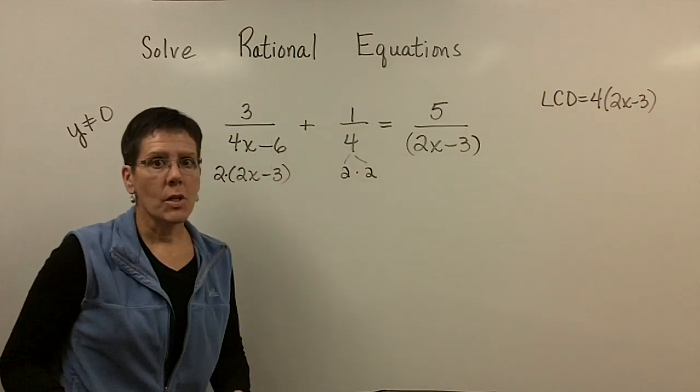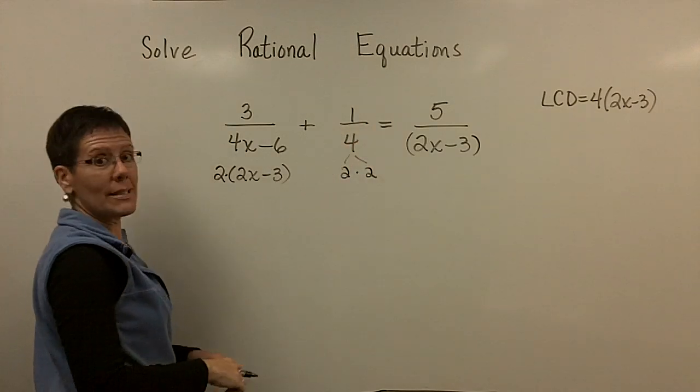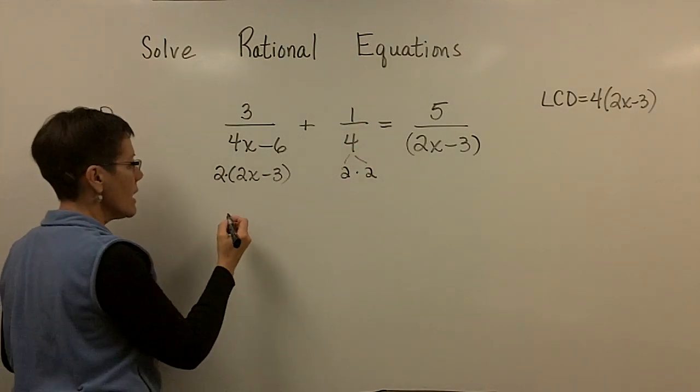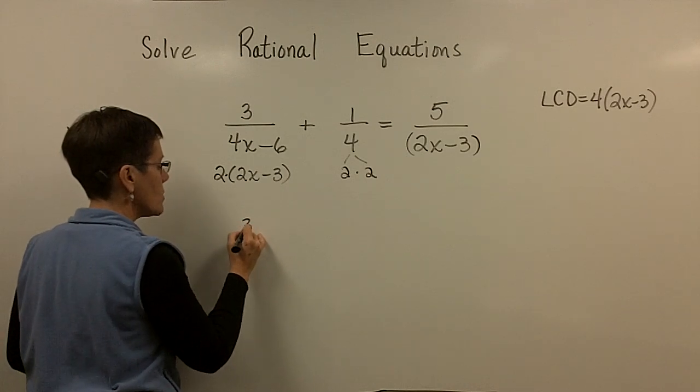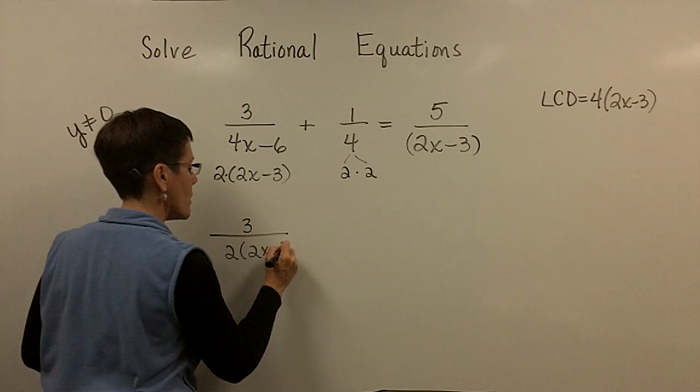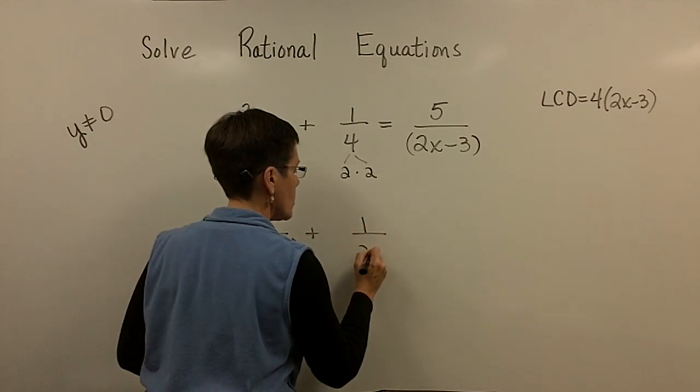Now remember, you're multiplying everything by that LCD. Think. I'm trying to decide if I have enough space here. I'm going to try rewriting this. So I have 3 in this numerator over 2 times that 2x minus 3. I'm even good on maybe think of this as 2 times 2. And then now I'm going to multiply by 4 times 2x minus 3.